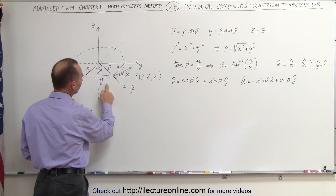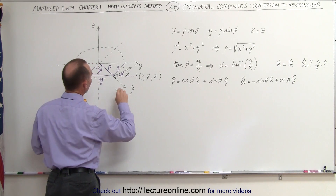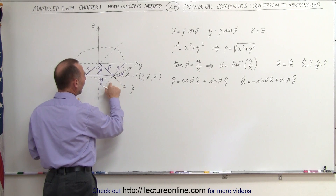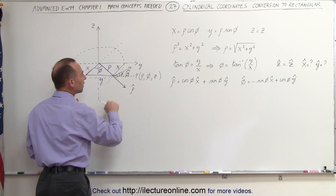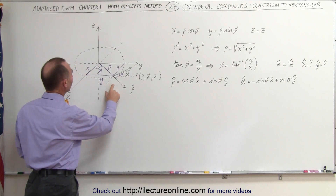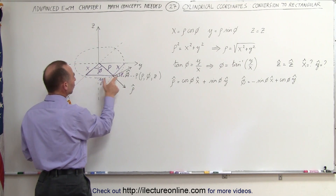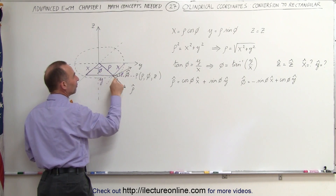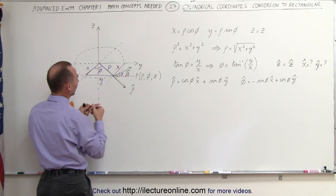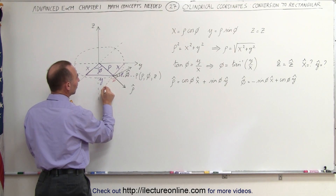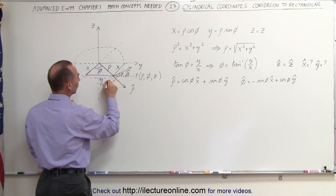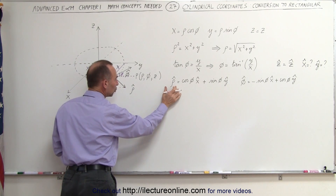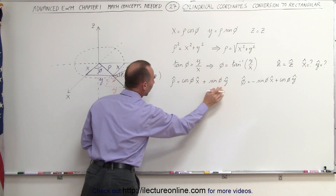We have an x component in this direction and the y component — let me draw that out. So we have an x component and a y component, and if we add the x and y components together we should get the rho unit vector. The x component can be found by taking rho times the cosine of phi, and the y component is rho times the sine of phi. So with x, y, and phi we can relate the rho unit vector to the x and y unit vectors.